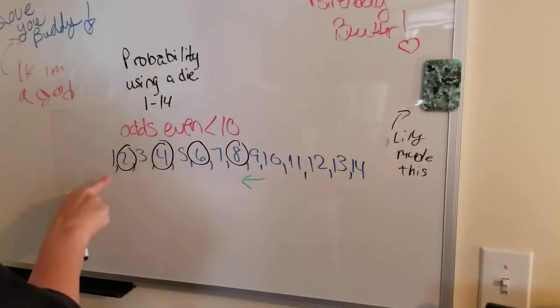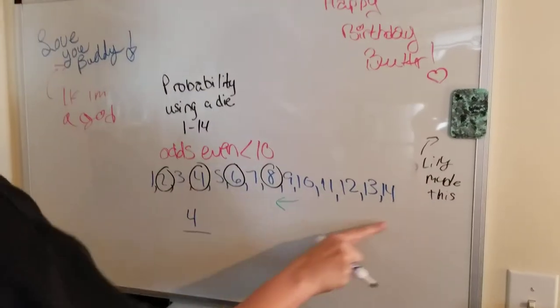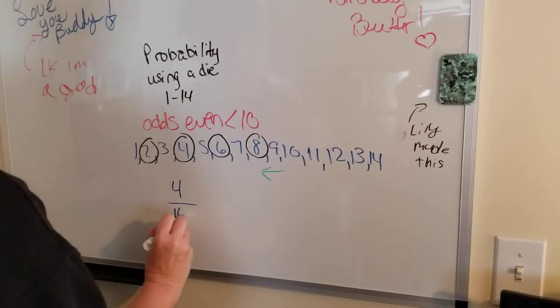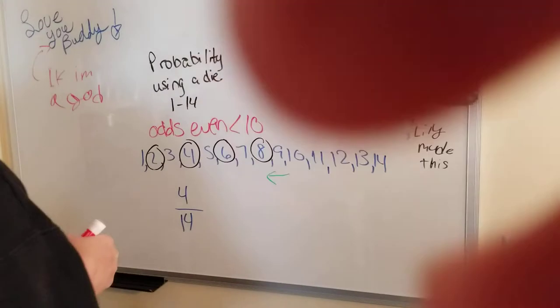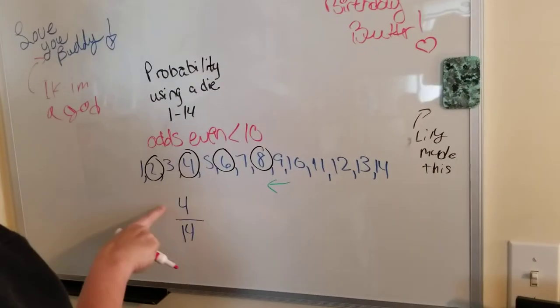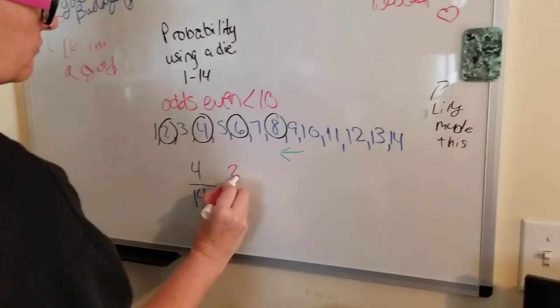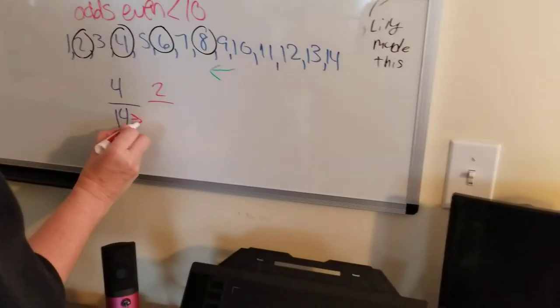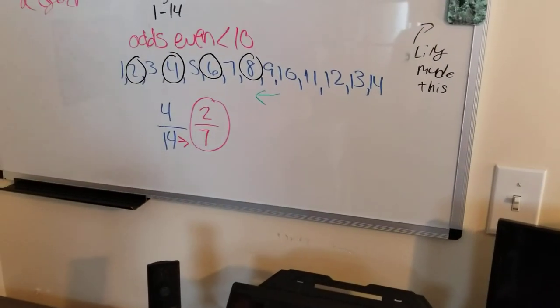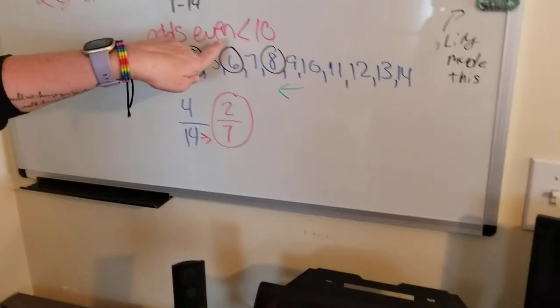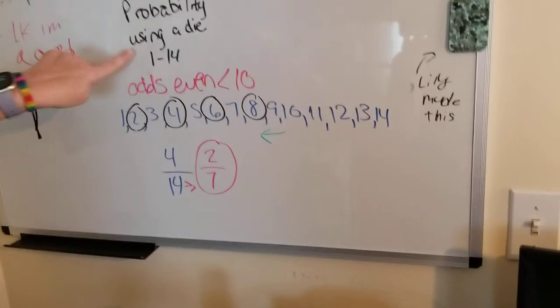Then you can count them up, 1, 2, 3, and 4 out of the 14 possible outcomes. You can then simplify this by saying 2 can go into 4 two times, and can go into 14 seven times, leaving you the odds of rolling an even number less than 10 on a 14-sided die, 2 out of 7.